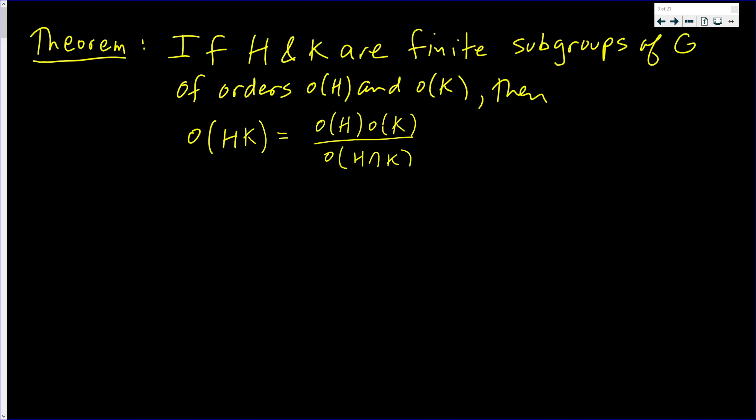This video is going to prove a major theorem. It states that if H and K are finite subgroups of G of orders |H| and |K|, then the order of HK is equal to the order of H times the order of K divided by the order of H intersect K.